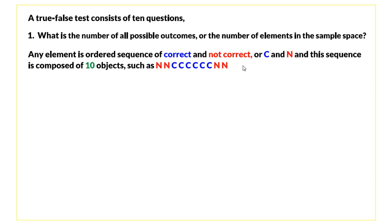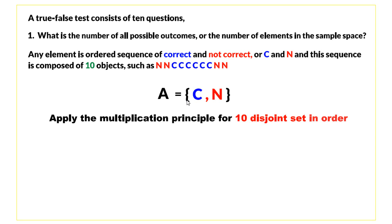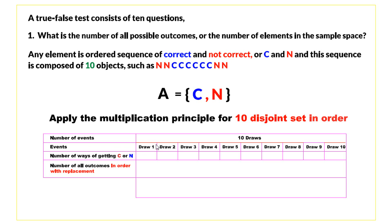Any element in the sample space is an ordered sequence of correct and not correct answers. Each question will be marked C for correct or N for not correct, and this sequence is composed of 10 objects. This sequence can be generated from a set containing only two objects, C and N. To find the number of elements in the sample space, we apply the multiplication principle for 10 disjoint ordered sets.